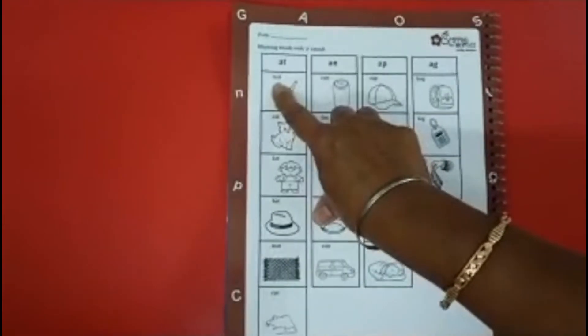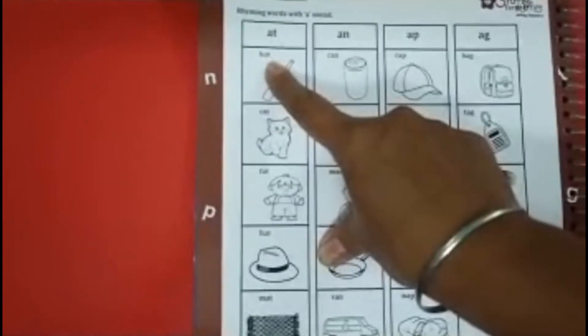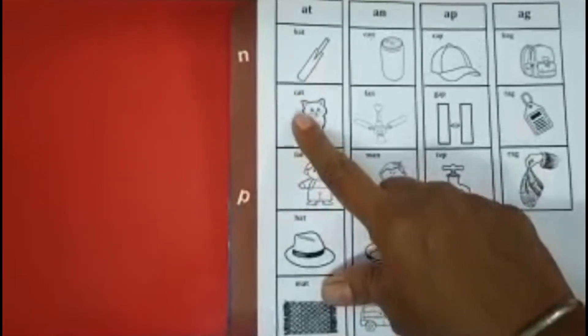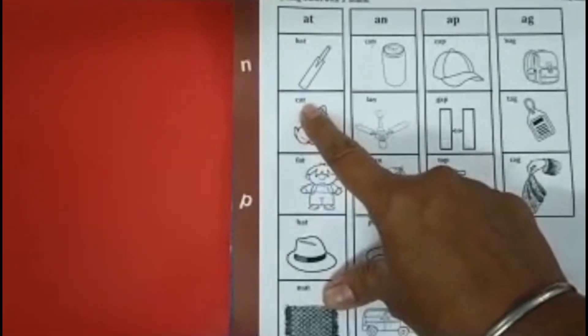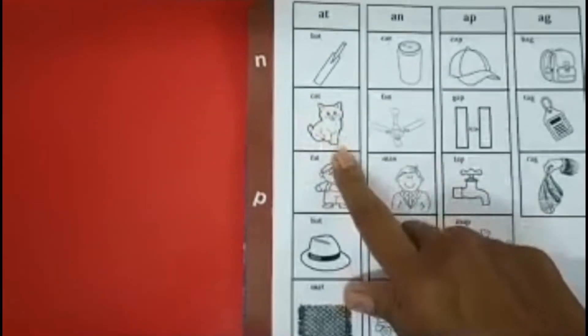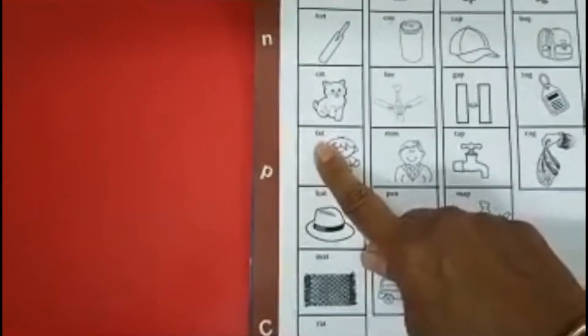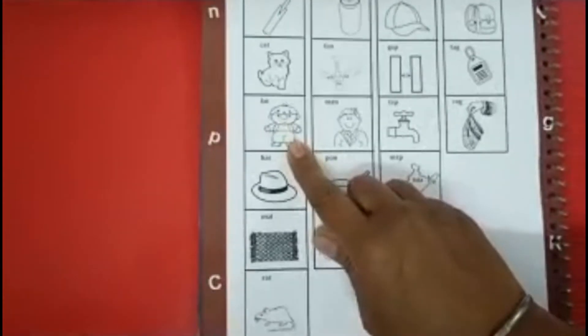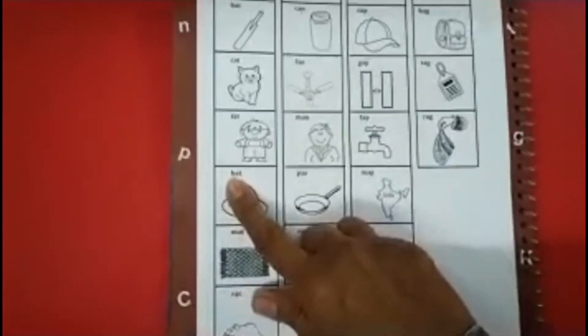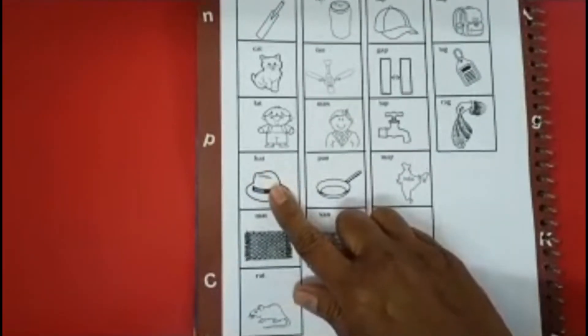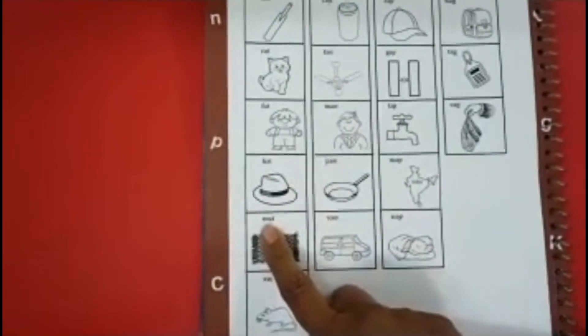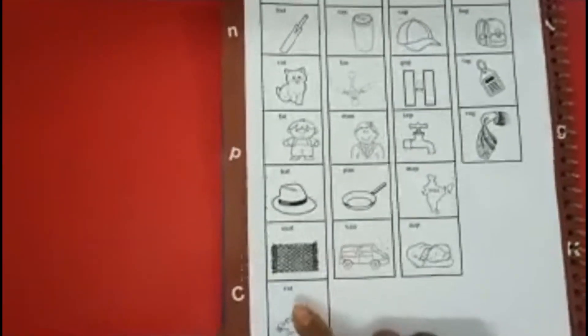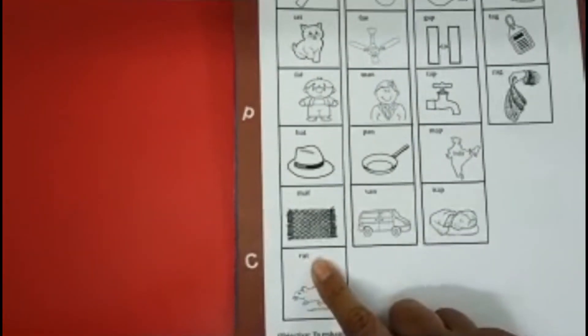Now, let's see. B, A, T, bat. K, A, T, cat. F, A, T, fat. H, A, T, hat. M, A, T, mat. R, A, T, rat.